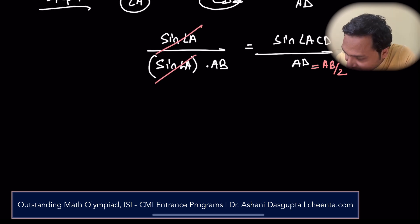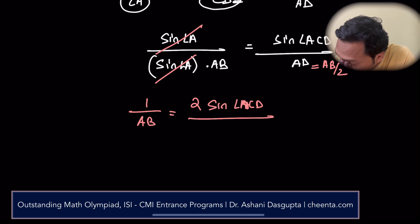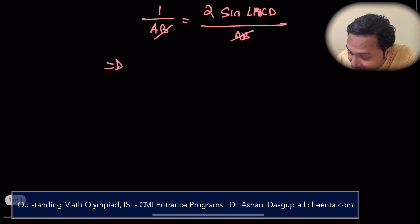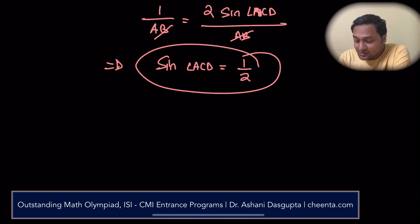So finally, we have 1 over AB equals 2 times sine of angle ACD divided by AB. So, AB cancels. Finally, we have sine of angle ACD is equal to 1 by 2. That's it.